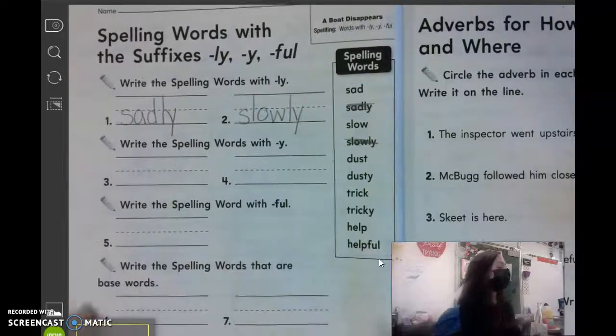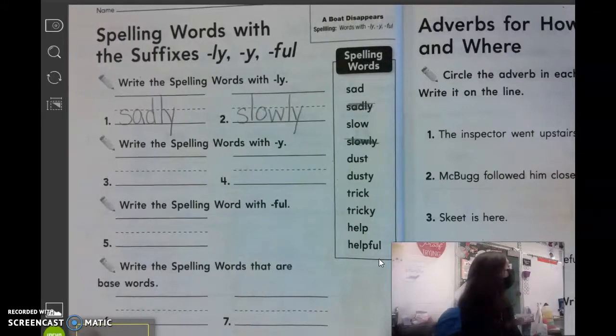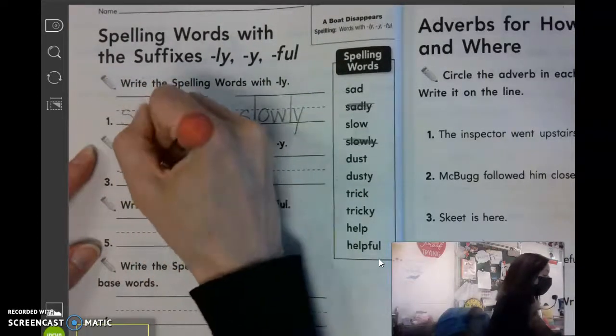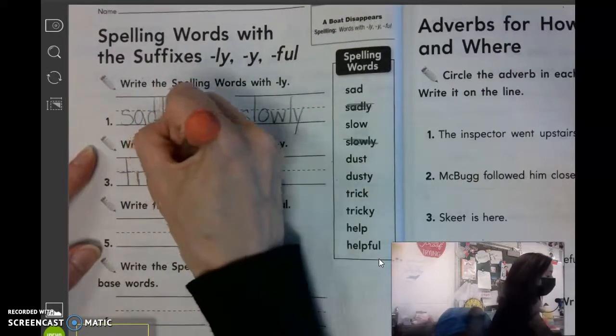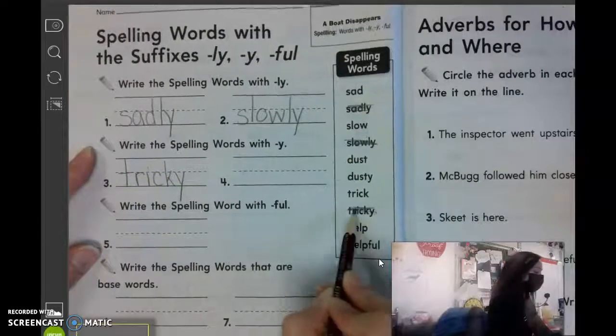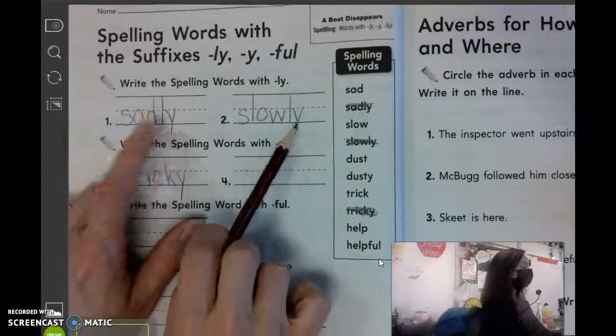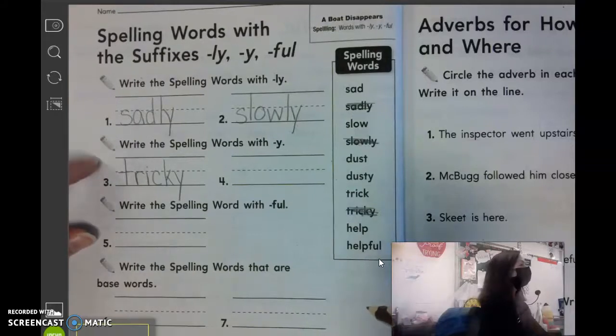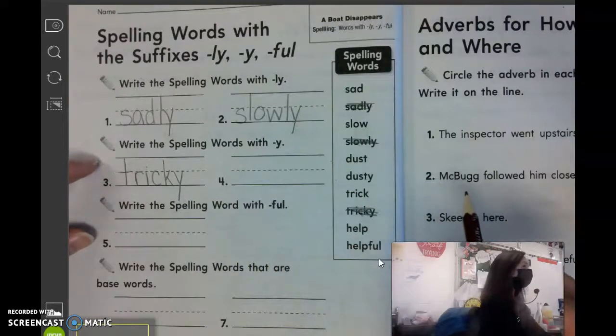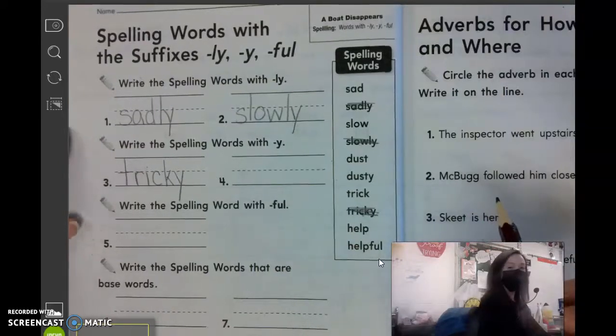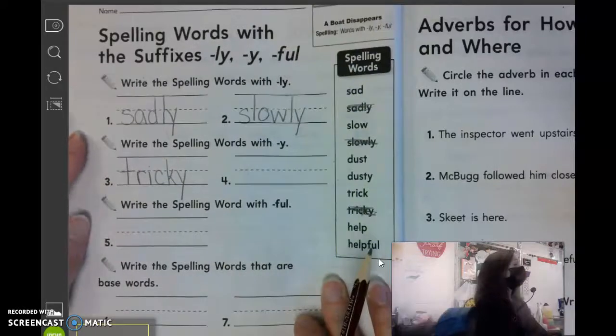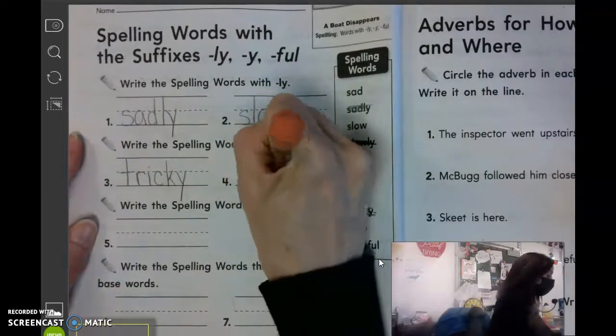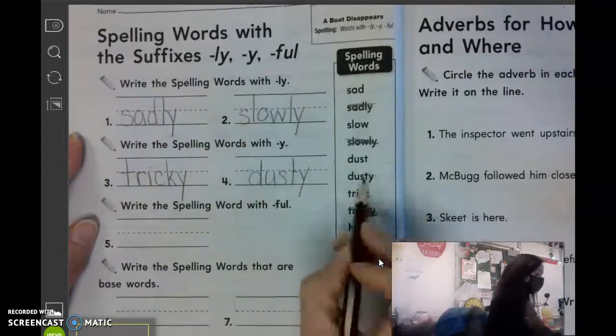Number three and four says to write the spelling words with just Y. What two spelling words just have a Y? Vivian? Dusty. Good. What's the other one? We already wrote slowly as L-Y, so we can't use that one again. Tricky does, though. What's the other one? Sadly is L-Y, too. Adam? We already have tricky. What's the other one? It has just a Y. Owen? Dusty. Right. It has just a Y at the end. Good. Tricky, dusty.